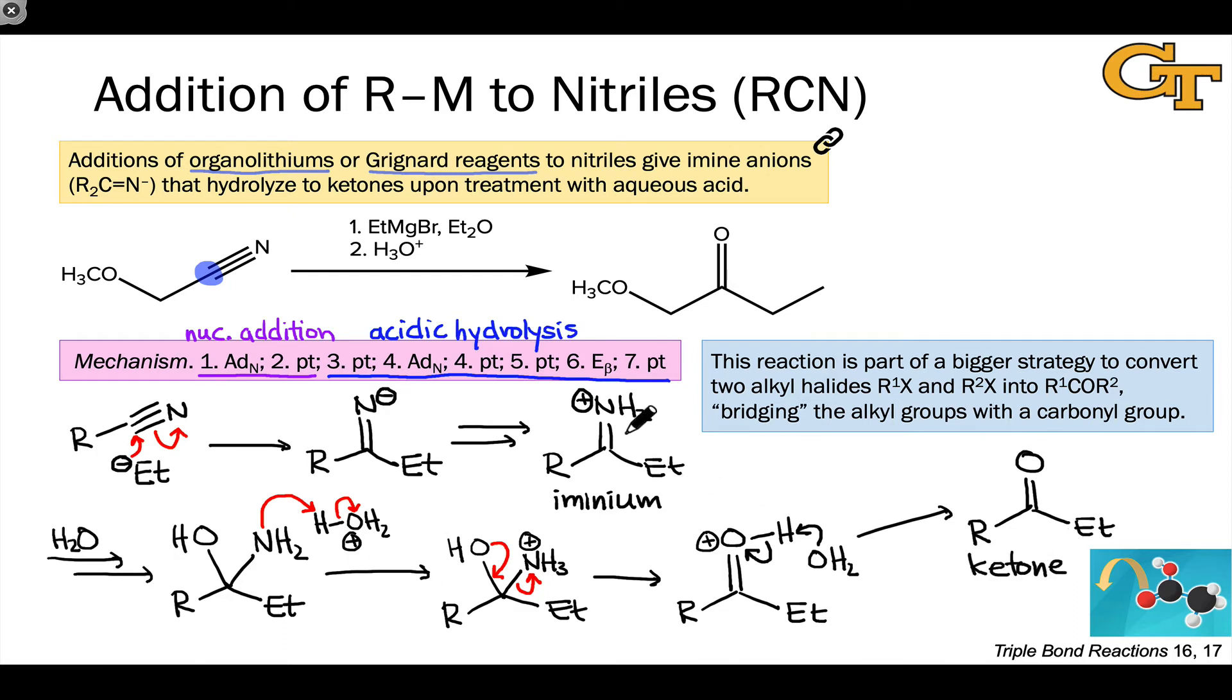And ultimately, all we've done from the iminium ion to the ketone is just an acidic hydrolysis process in which oxygen substitutes for nitrogen. The cool thing about this reaction is that it can be used as part of a bigger strategy where we start with two alkyl halides, R1X and R2X. And we essentially bridge them with the carbonyl group to form the corresponding ketone, R1 linked to the carbonyl carbon and R2 linked to the carbonyl carbon.